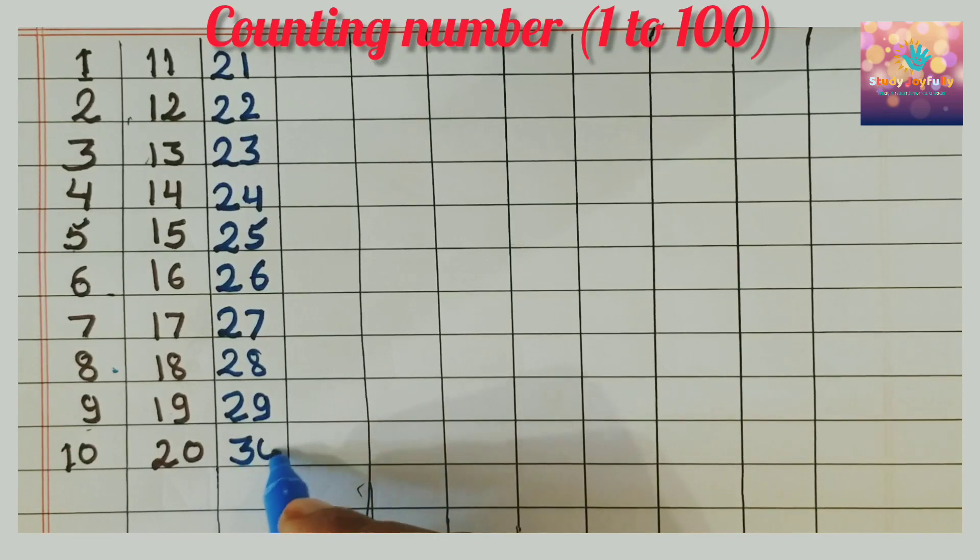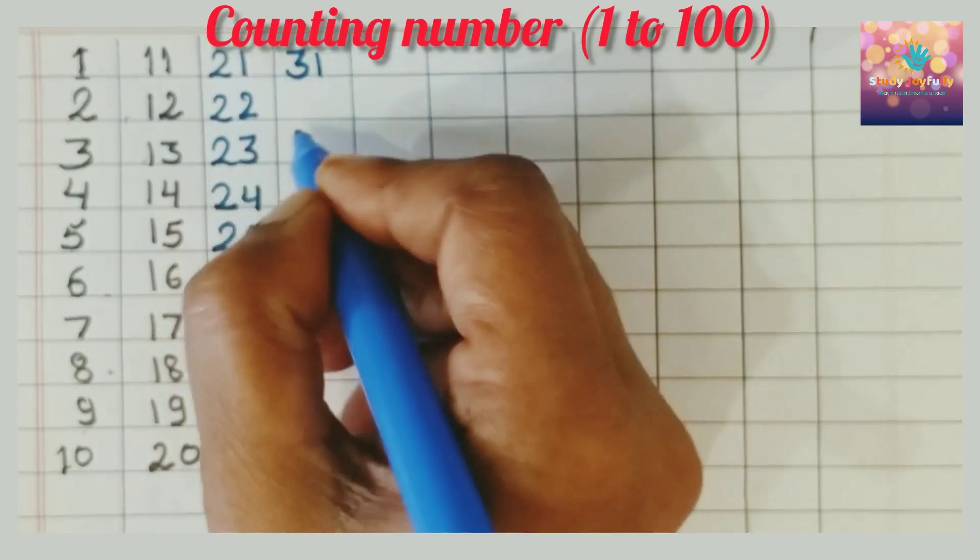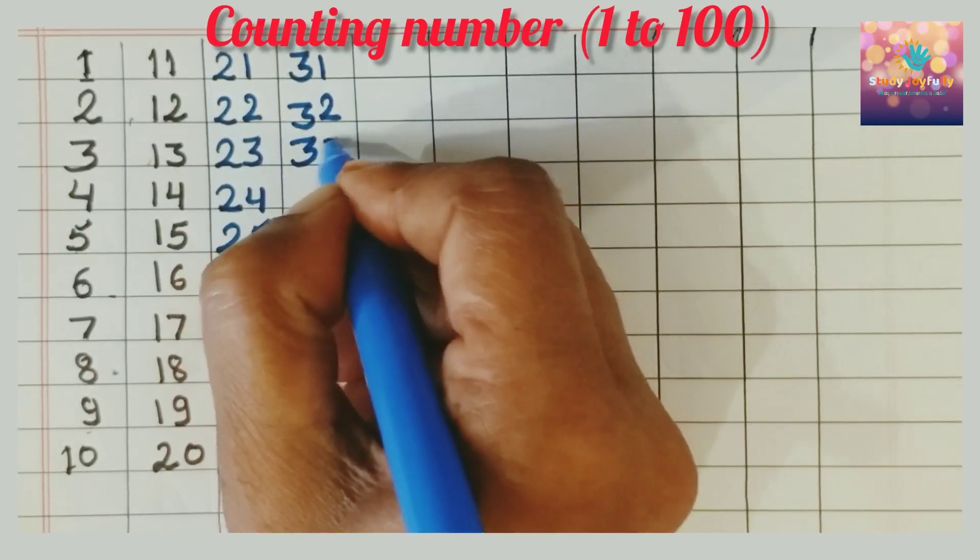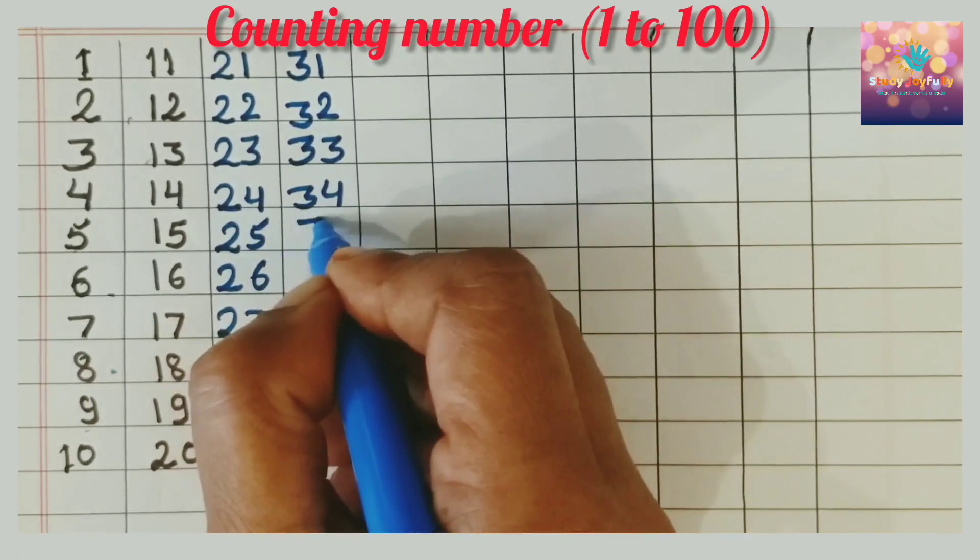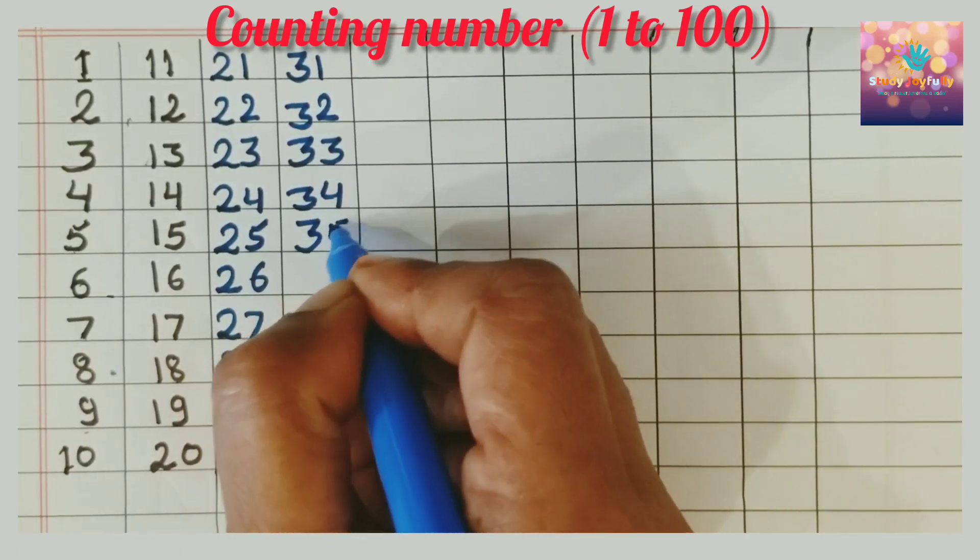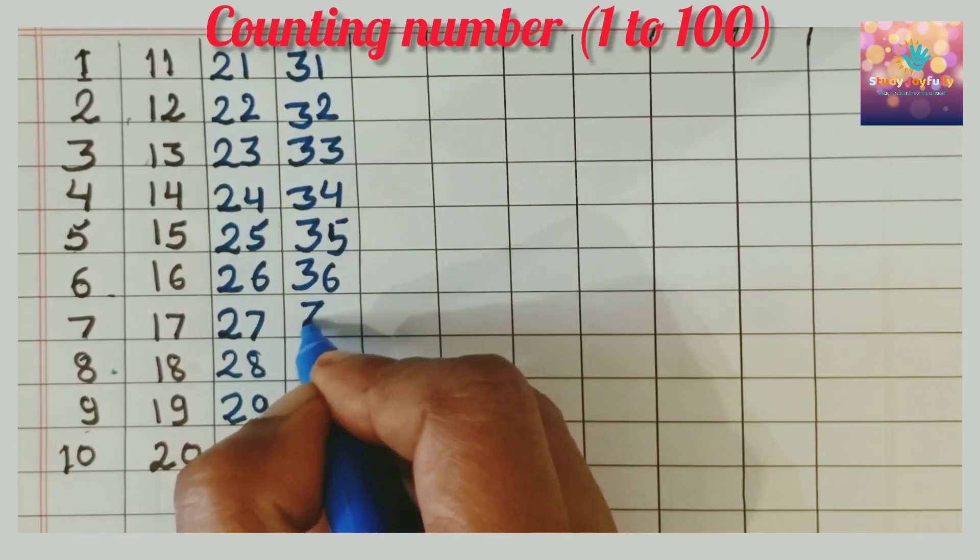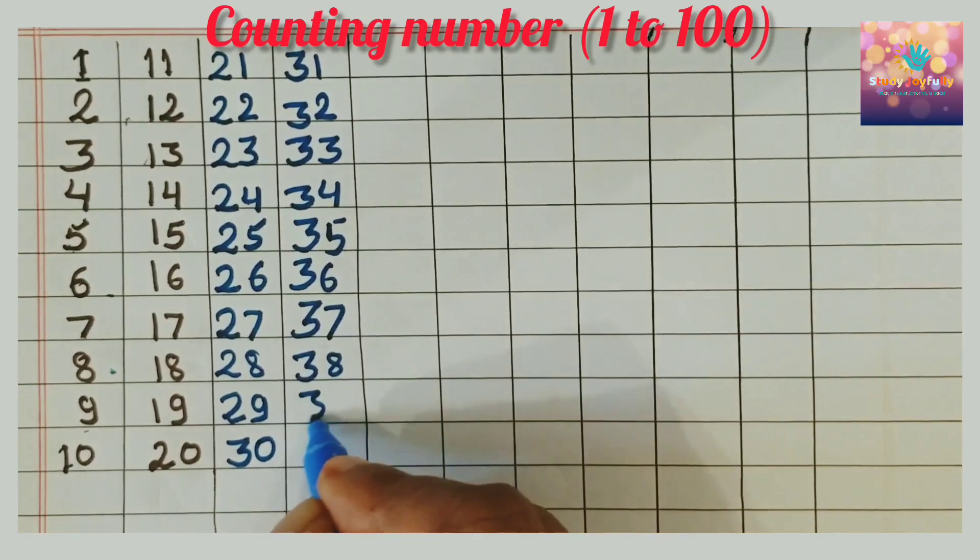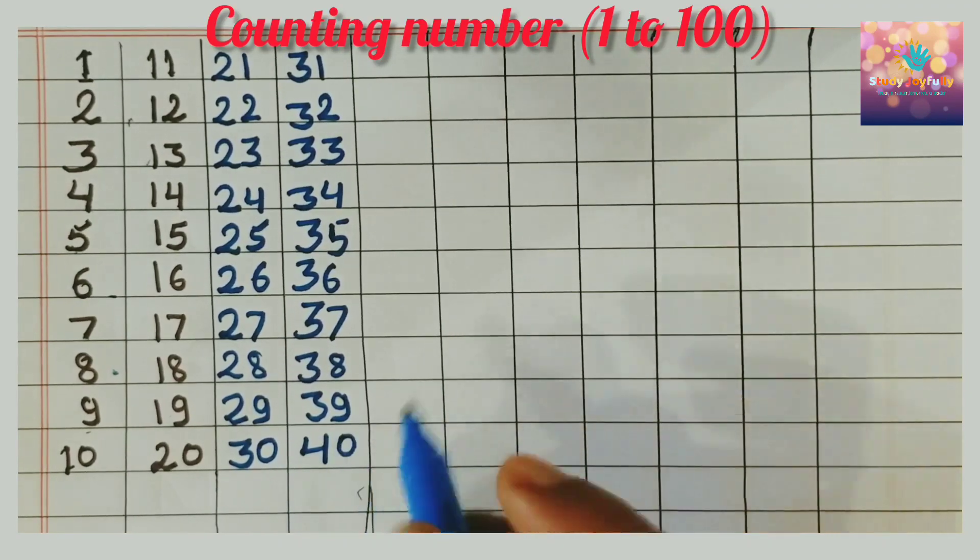3, 0, 30. 3, 1, 31. 3, 2, 32. 3, 3, 33. 3, 4, 34. 3, 5, 35. 3, 6, 36. 3, 7, 37. 3, 8, 38. 3, 9, 39. 4, 0, 40.